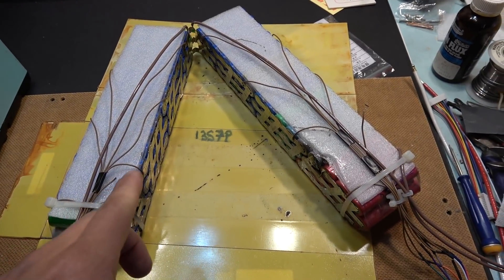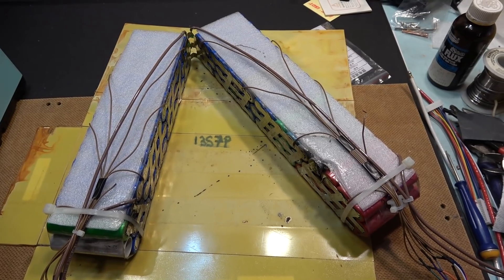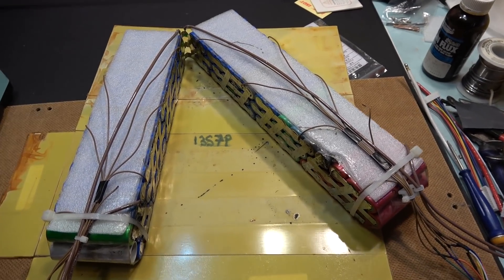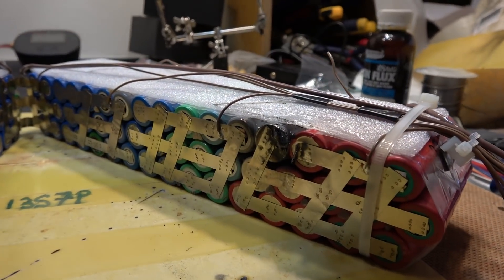This is my e-bike battery in a 13S7P configuration. I accidentally shorted out the battery pack and it damaged one cell.